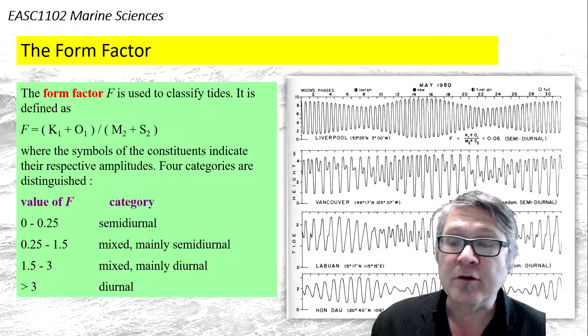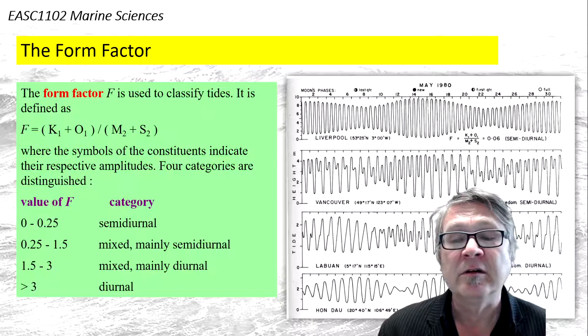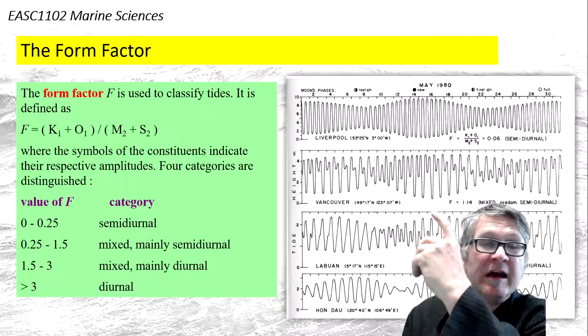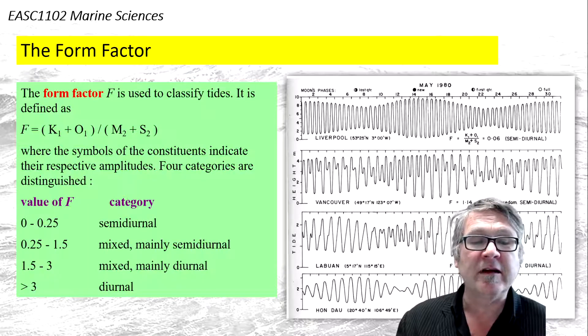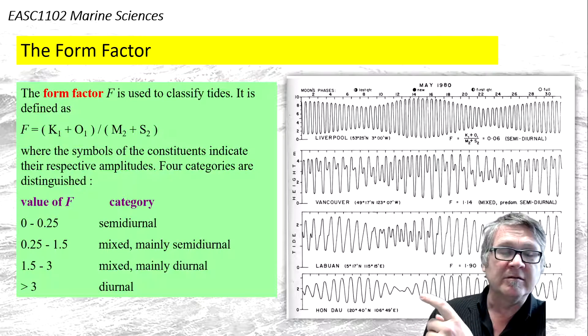You can categorize different tides by classifying them as diurnal or semi-diurnal. And that's shown, different locations are shown here behind me. At the top you have Liverpool, which is more semi-diurnal type, and the bottom one is Hondau, which is more a diurnal type.